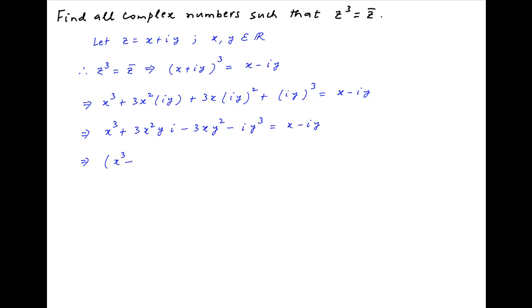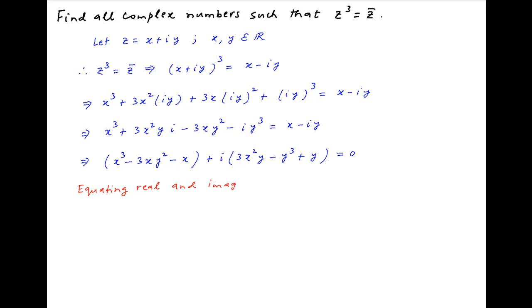Moving all terms to the left hand side and separating the real and imaginary terms, we get x cube minus 3xy square minus x plus i times 3x square y minus y cube plus y is equal to 0. Now equating the real and imaginary terms across the left hand side and the right hand side, we have x cube minus 3xy square minus x is equal to 0, and 3x square y minus y cube plus y is equal to 0.